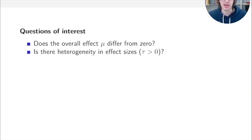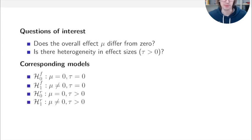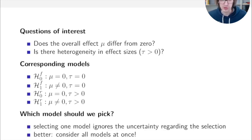The questions of interest are twofold: first, whether there is an effect — whether overall effect mu differs from zero — and second, whether heterogeneity tau is larger than zero. Combining these two aspects gives four different models denoted by H for hypothesis: H0 (null) and H1 (alternative), with F for fixed and R for random. The question is which model to pick, but selecting one ignores uncertainty about which is correct. It may be better to consider that uncertainty — which is exactly what Bayesian model averaging does.